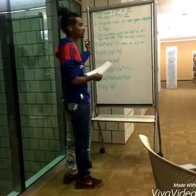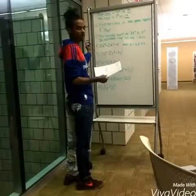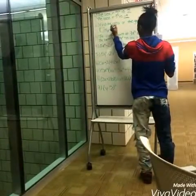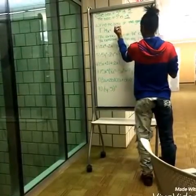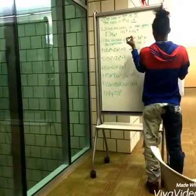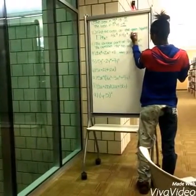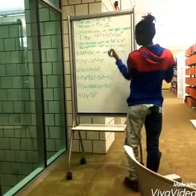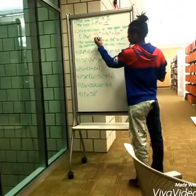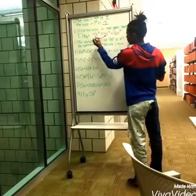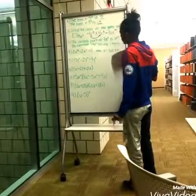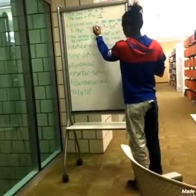For number two, when you find the area of a square, all of the sides are equal. So you just do 4x to the third times 4x to the third, which will give you 16x to the sixth. I multiplied the two terms and then their powers you add, so I added those numbers.